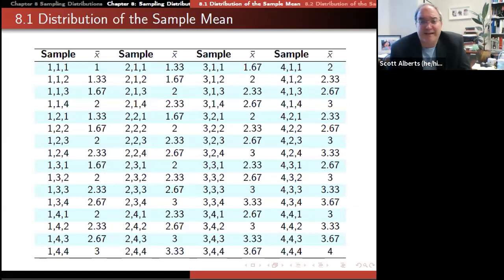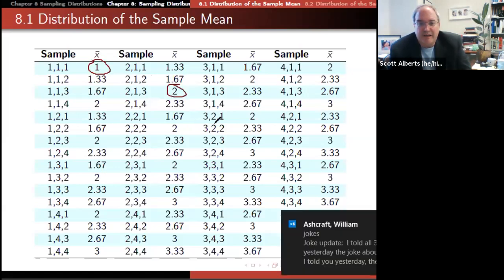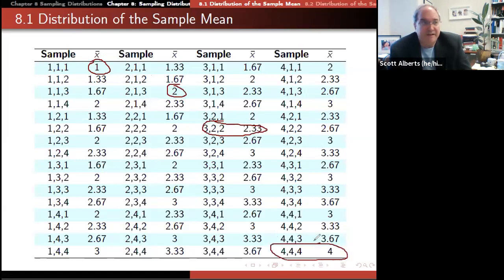If we do that, it's going to have the mean for each one. If we roll three 1s, the mean is 1. If we roll 2, 1, 3, the mean is going to be 2. If we roll 3, 2, 2, the mean is going to be 2.3, all the way up to 4, 4, 4, which would give us a mean of 4. That's kind of interesting.